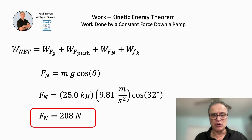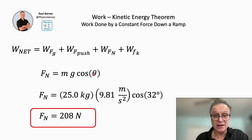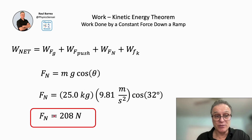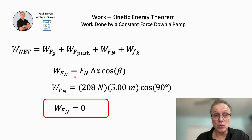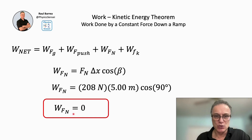For the normal force, we first calculate its value: N = mg·cos(θ), which gives 208 newtons. You can find the derivation of this in my other videos about Newton's second law on a ramp. The work done by the normal force is N·d·cos(90°), but since the normal force and the displacement make a 90-degree angle, cos(90°) = 0, so the work done by the normal force is zero.